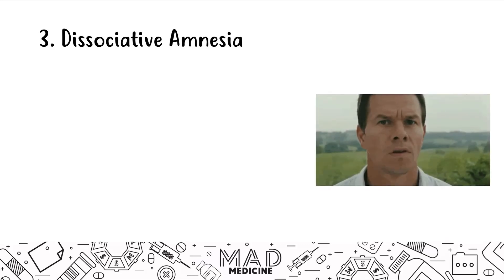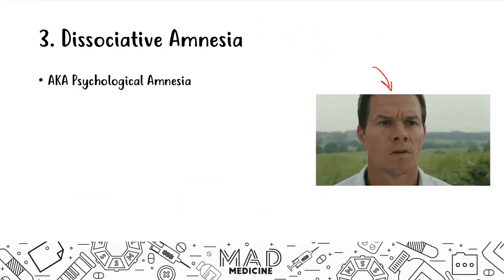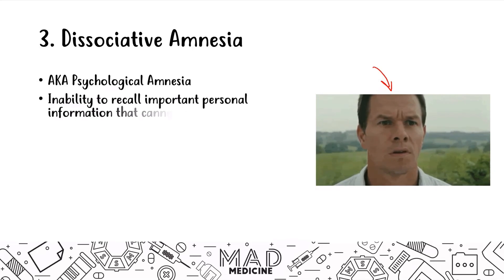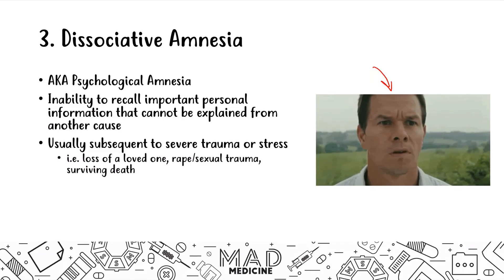The third disorder is dissociative amnesia, also known as psychological amnesia. In this condition, the patient is not going to be able to recall important personal information that cannot be explained by another cause. It's something that happens on its own, usually subsequent to severe trauma or stress — not a brain tumor or cancer — it's trauma or stress that causes it. Examples include losing a loved one, being raped, or surviving a near-death experience.